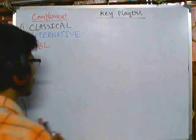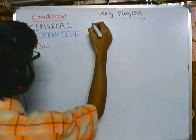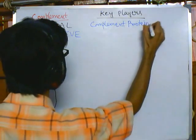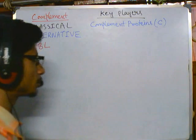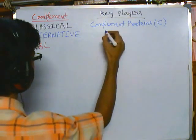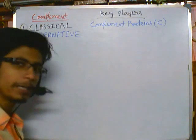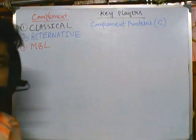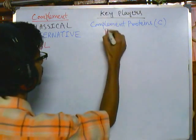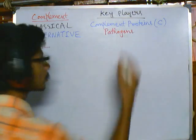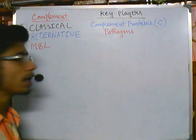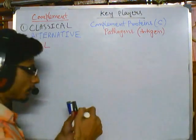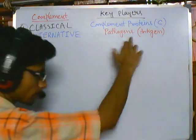The key players: first, the complement proteins, simply known as C proteins — C1, C2, C3, C4, and so on. Second, we need bacterial cells — not only bacteria but also pathogenic cells, because we are generating this complement system for pathogens. More specifically, we require the antigen, because it is the attachment of complement proteins to the antigen surface provided by the pathogen surface like bacteria or viruses.